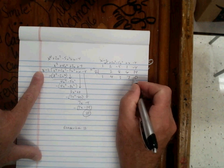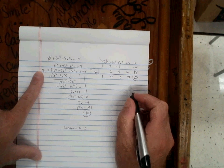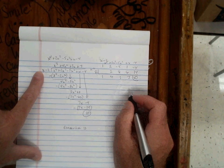And if I add the last column, that always gives me my remainder. And in this case it's going to be 10. Negative 4 plus 14 is 10.